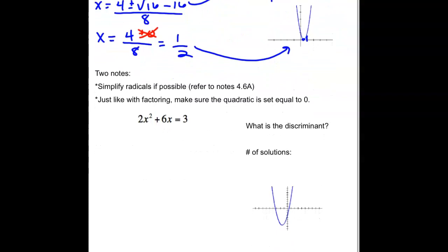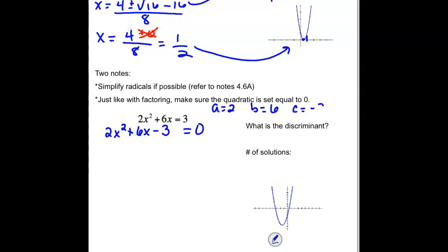Two notes: you should simplify radicals if possible. And just like with factoring, make sure the quadratic is set equal to 0 first. We have 2x squared plus 6x equals 3 — we have to have a 0 on one side. So we rewrite this as 2x squared plus 6x minus 3 equals 0. So a is 2, b is 6, and c is negative 3.